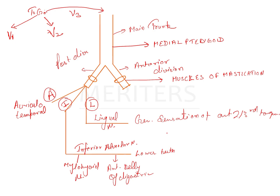The lingual nerve supplies the general sensation of the anterior two-thirds of the tongue. There will also be postganglionic fibers to the sublingual and submandibular salivary glands that will be passing through with the help of the lingual nerve. So postganglionic fibers pass to the sublingual gland and to the submandibular salivary gland.